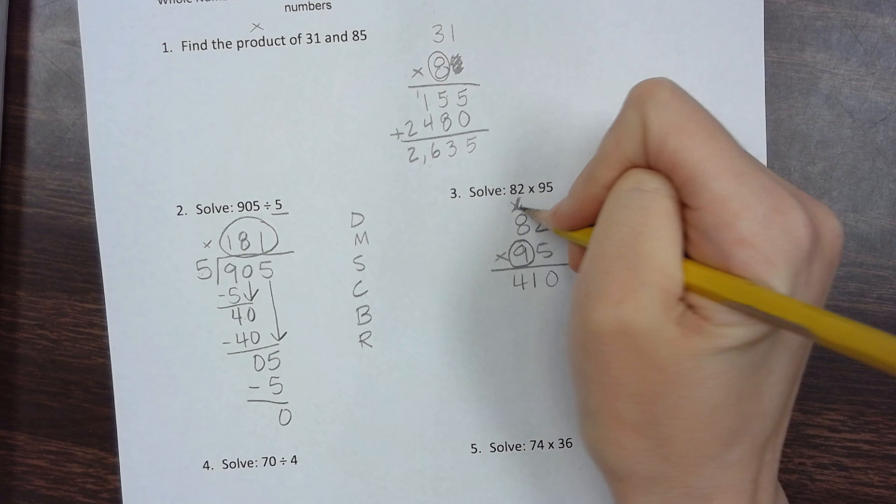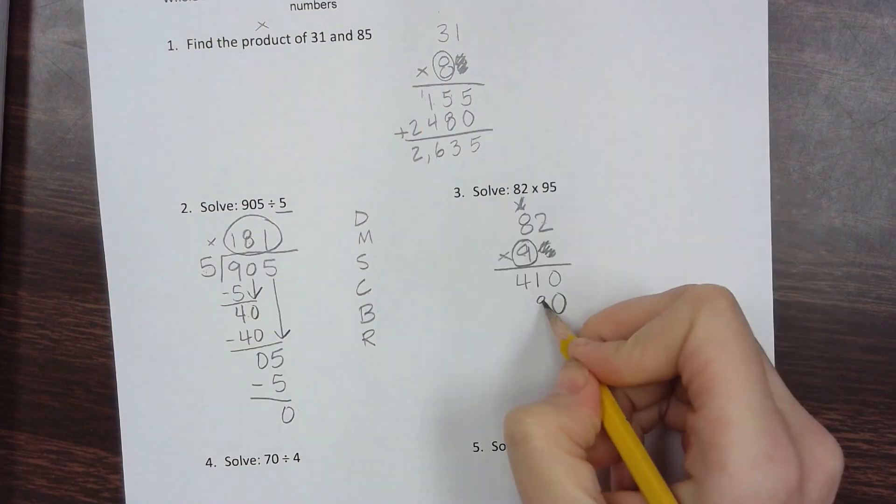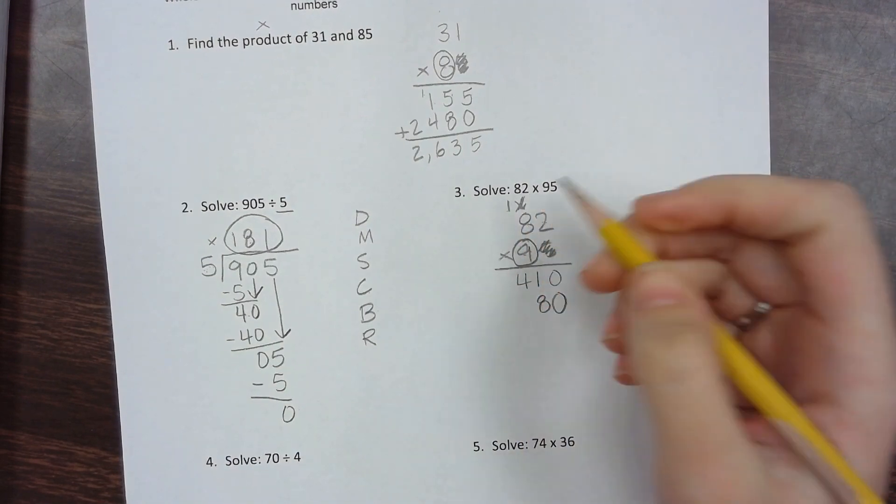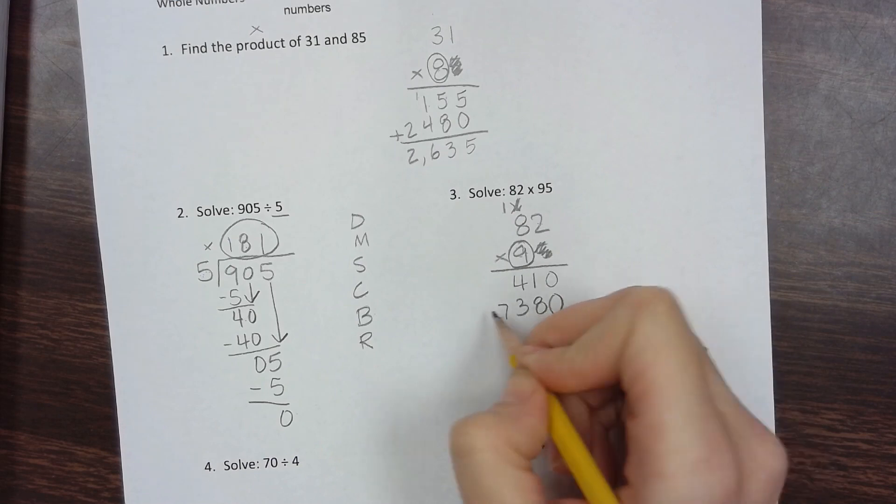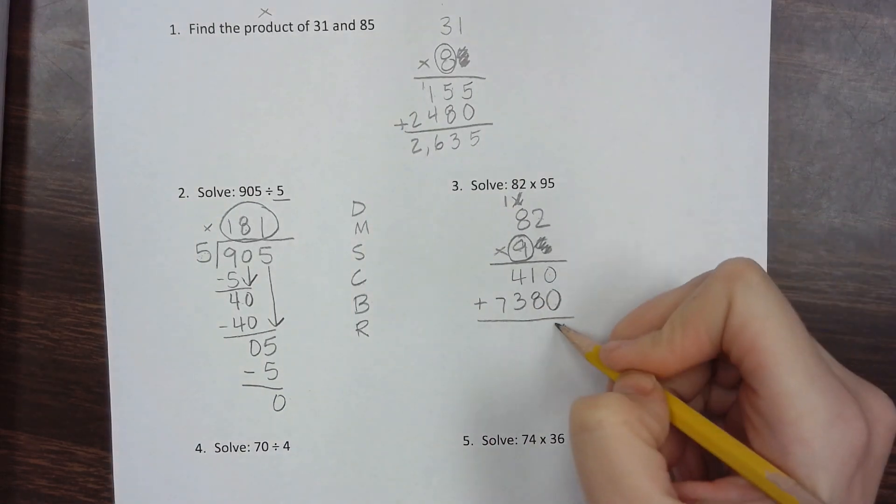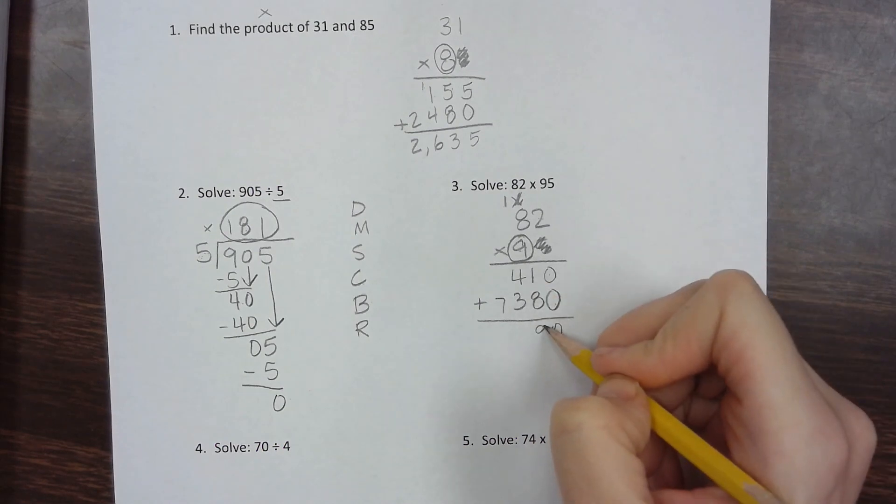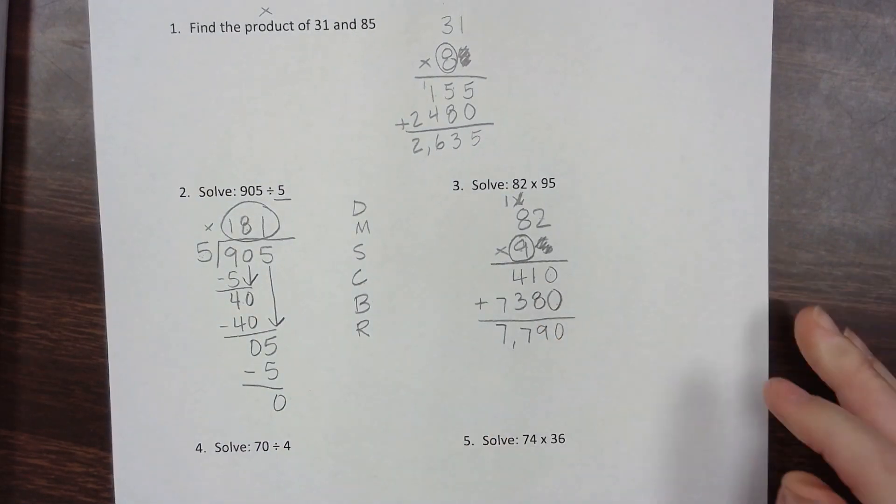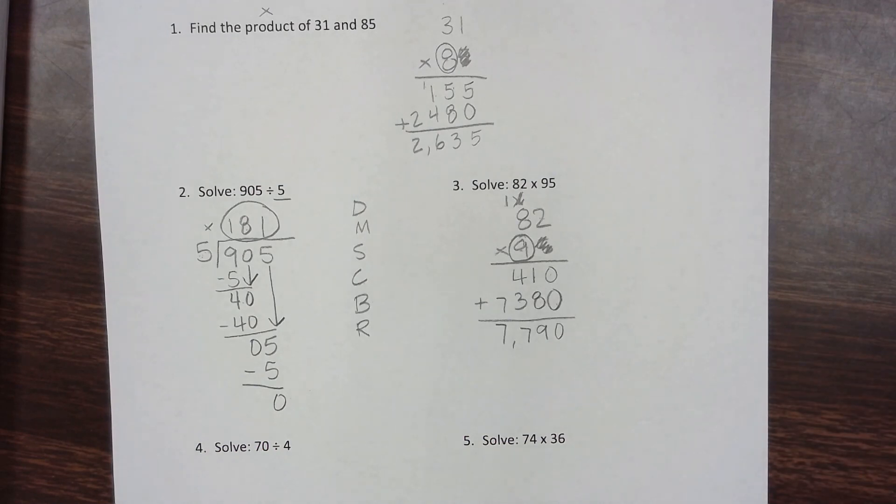9 times 2 is 18, carry the 1. 9 times 8 is 72, plus 1 is 73. Now add those two parts: 0 plus 0 is 0, 1 plus 8 is 9, 4 plus 3 is 7, bring down the other 7. The answer is 7,790.